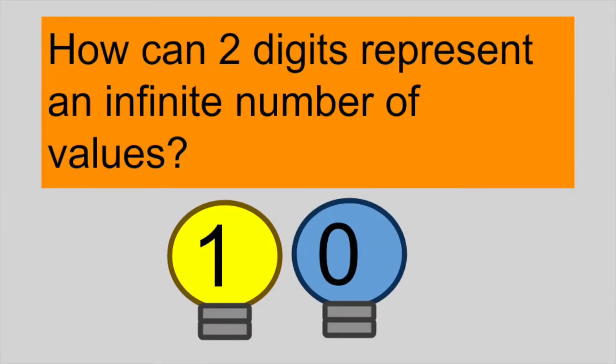So now that we know what bits are, let's learn how such a simple system can store such a wide array of information. We will now learn how to represent virtually any number using just ones and zeros.